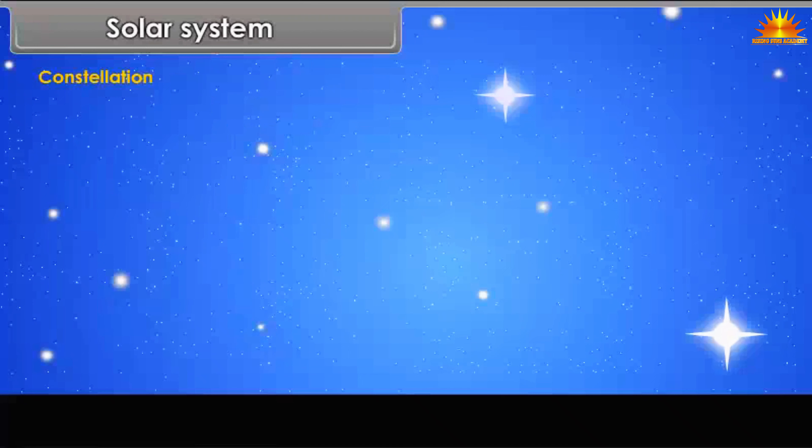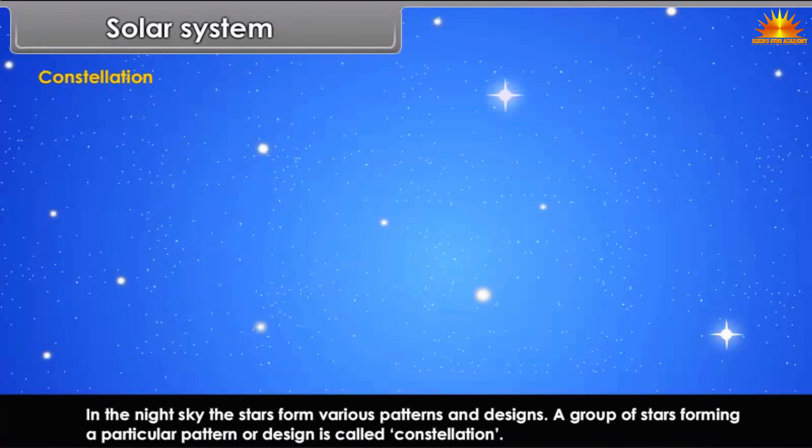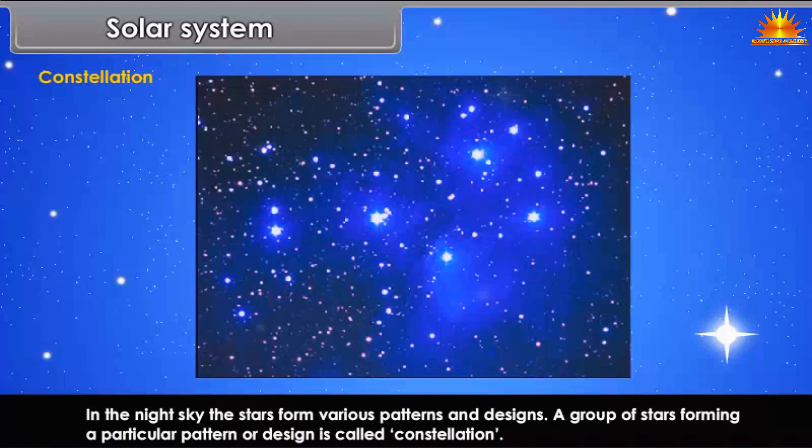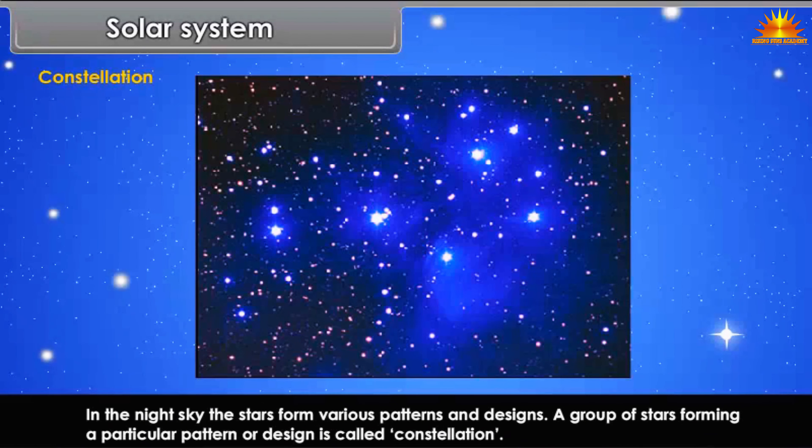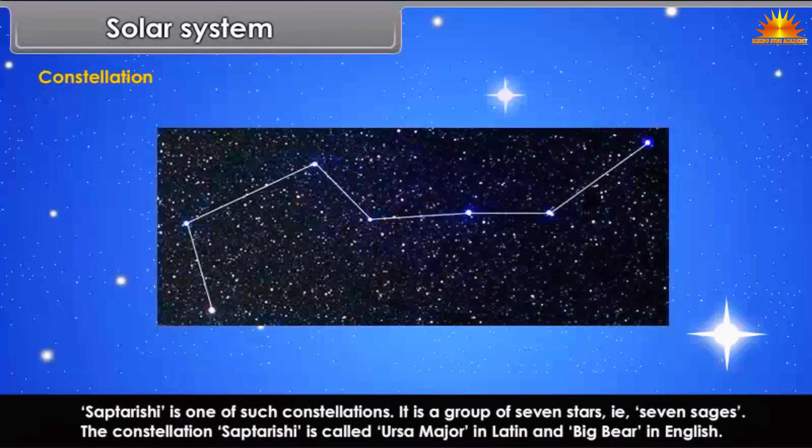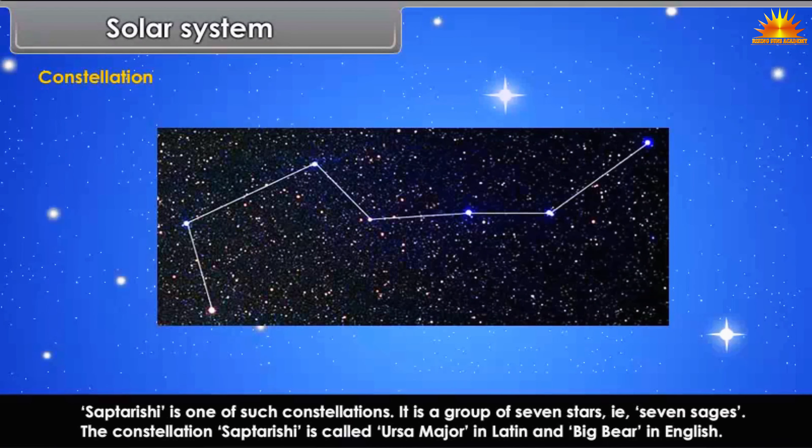Constellation: In the night sky, the stars form various patterns and designs. A group of stars forming a particular pattern or design is called constellation. Saptarashi is one of such constellations. It is a group of seven stars, the seven sages.